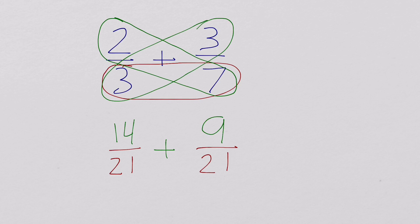Now, we have our common denominators. So we can add them together. 14 plus 9 is 23. Denominator stays the same at 21. So we get 23 21sts, which is the same as 1 and 2 21sts.